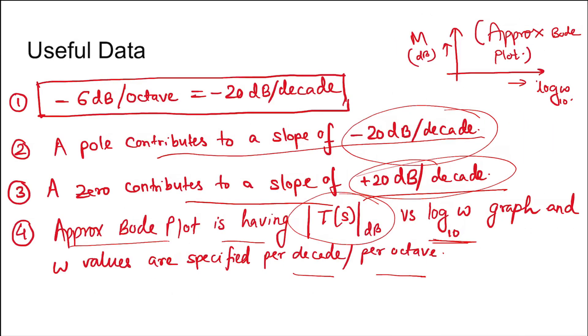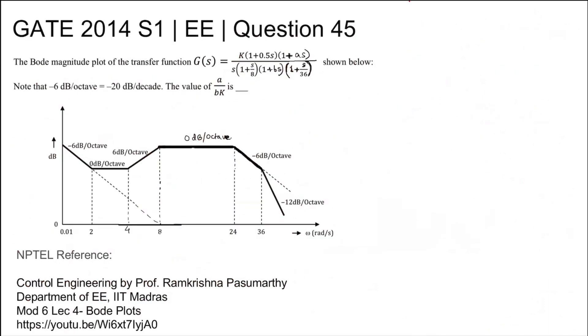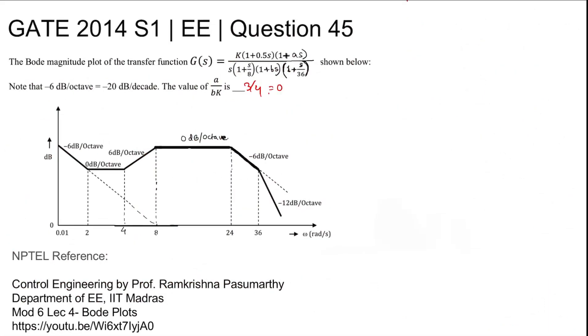So a/bk value is being asked. Now a/bk equals a is 1/4 divided by b times k, so b is 1/24 into k which is 8, so 3/4 is coming as the answer. So answer is 3/4 or we can write it as 0.75.